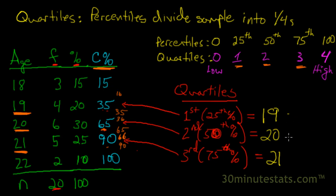Now we've got our three quartile values. 19 represents the first quartile, 20 represents the second, and 21 represents the third. This is one example of how to find the quartile values using cumulative percentages in a frequency distribution table.